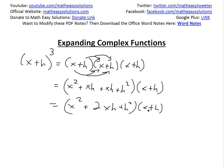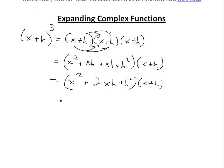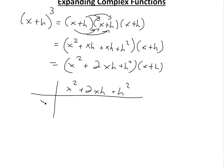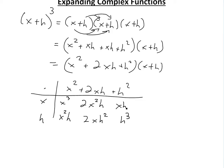Now you expand these out — multiply this by every single one. You can use an alternative matrix method here. Write down x squared, 2xh, and h squared along one side, and x and h along the other. Multiply diagonally: x squared by x, x squared by h gives x squared h, giving 2x squared h along that diagonal, and similarly xh squared, then h times h squared gives h cubed, and x h squared.